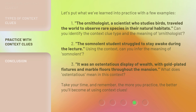3. "It was an ostentatious display of wealth, with gold-plated fixtures and marble floors throughout the mansion." What does "ostentatious" mean in this context? Take your time, and remember, the more you practice, the better you'll become at using context clues.